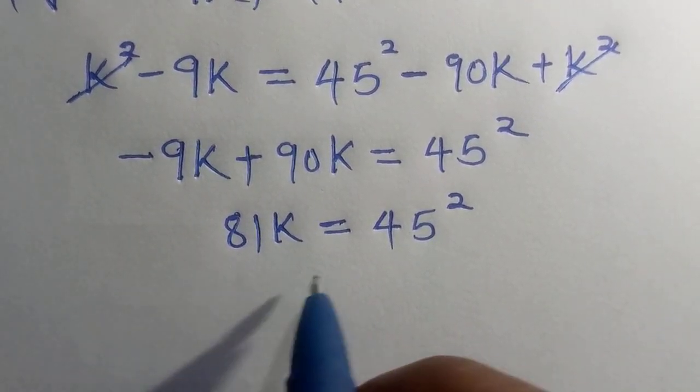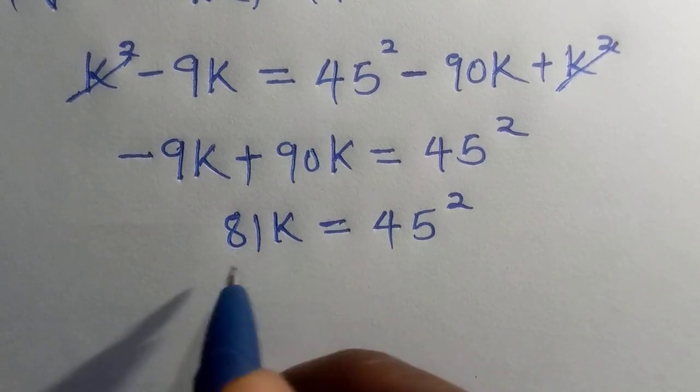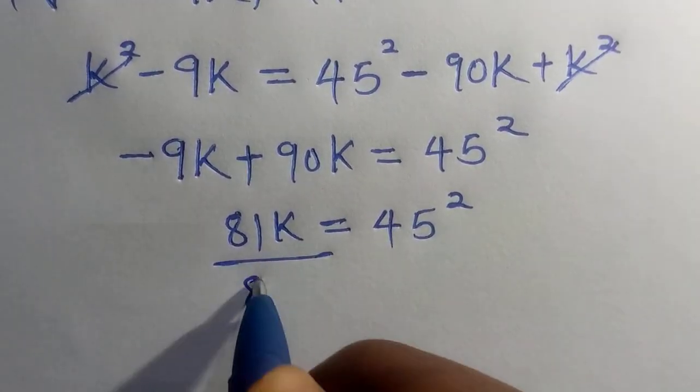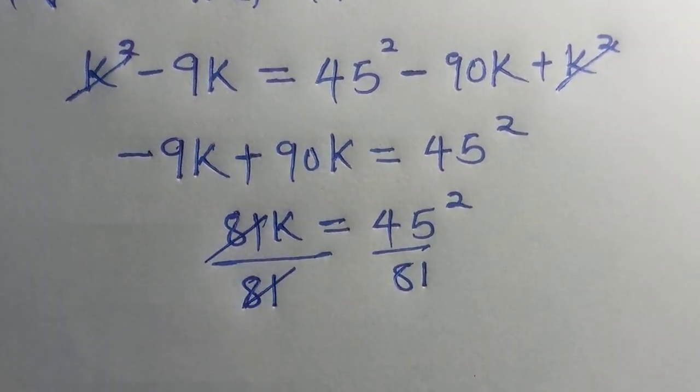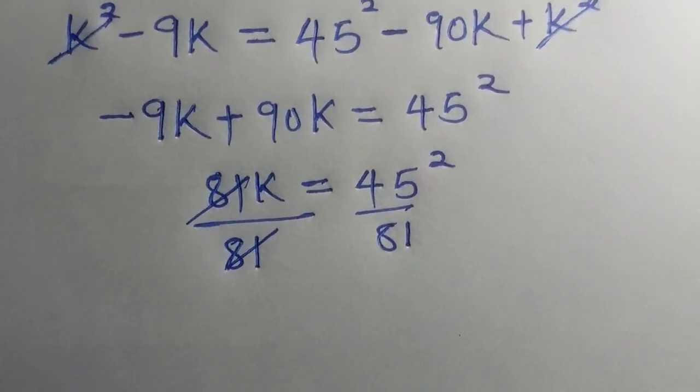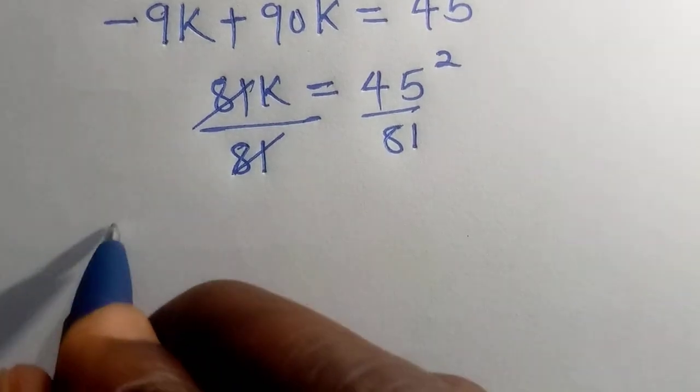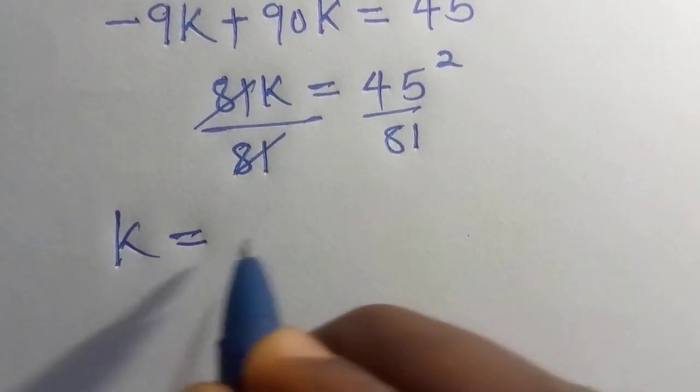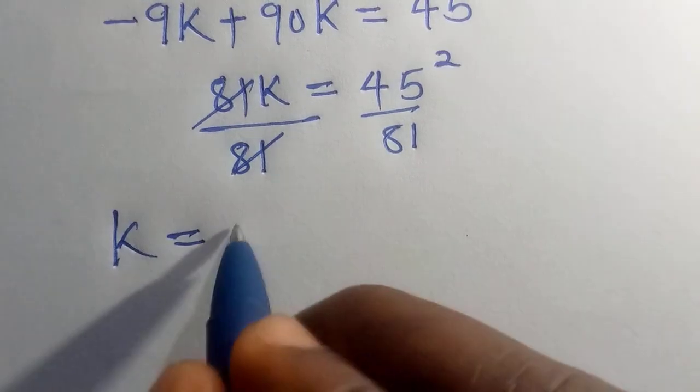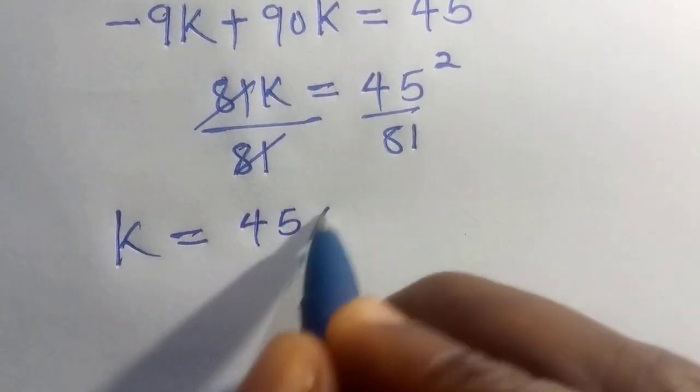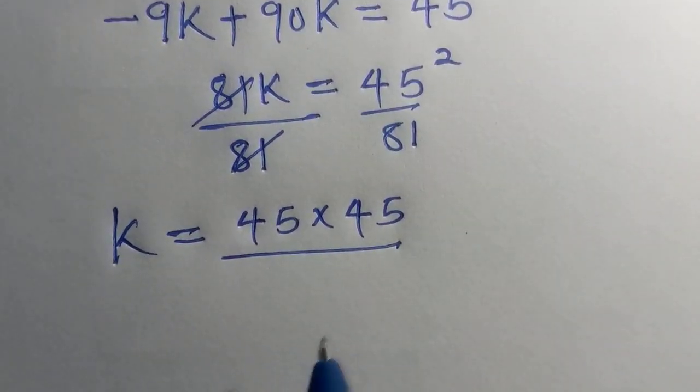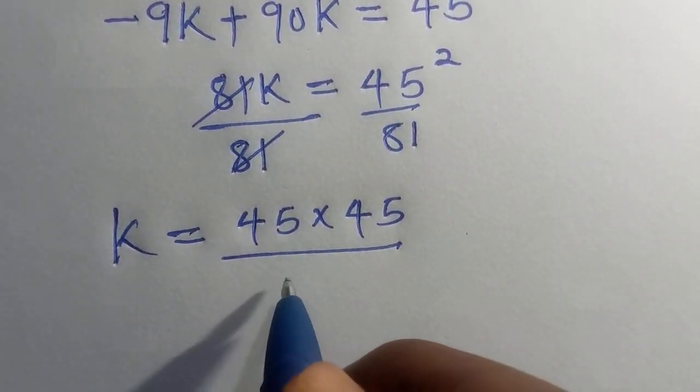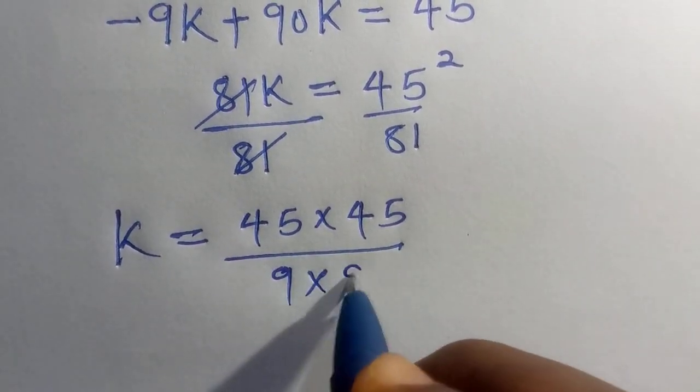So, we divide both sides by 81. If this cancels, we are going to have k equals 45 square is 45 multiplied by 45 divided by 81, which is 9 multiplied by 9.